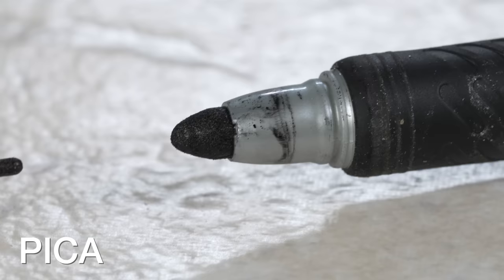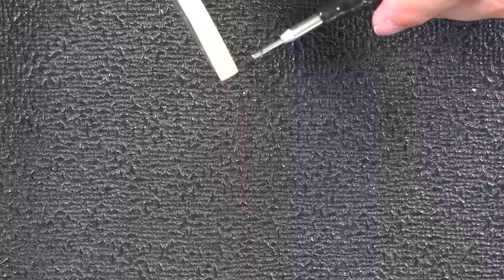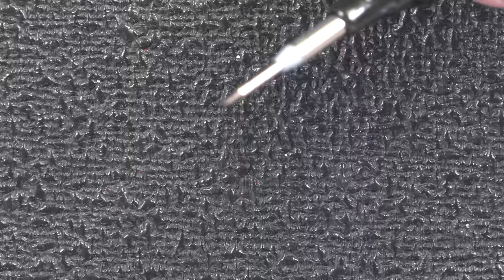Another clever trick on the Pika is you can actually reverse the tip. So if it ends up getting damaged or worn out, you just pull it out, reinsert it into the body, and now you've got a brand new tip ready to go.